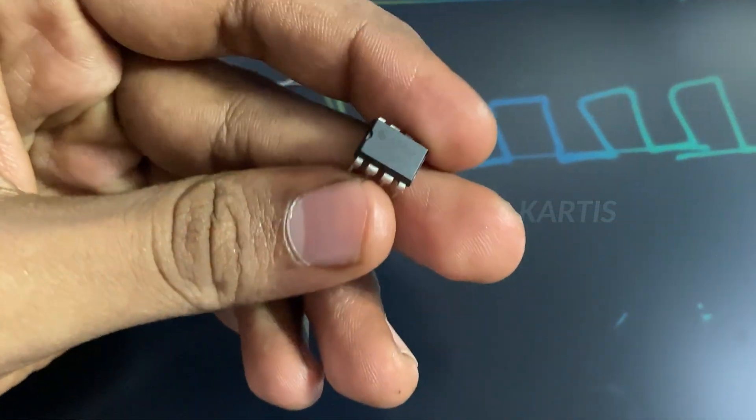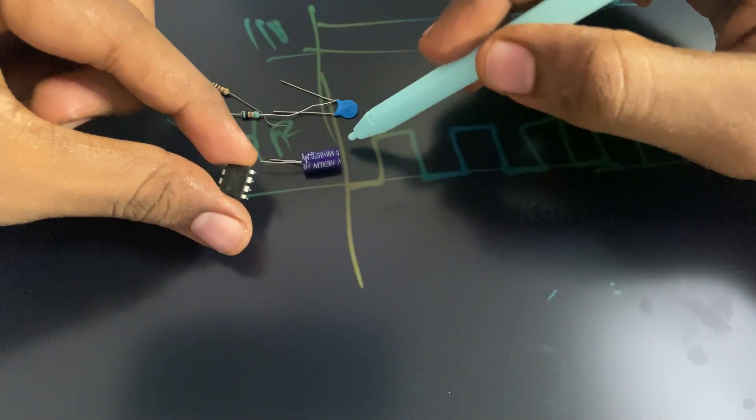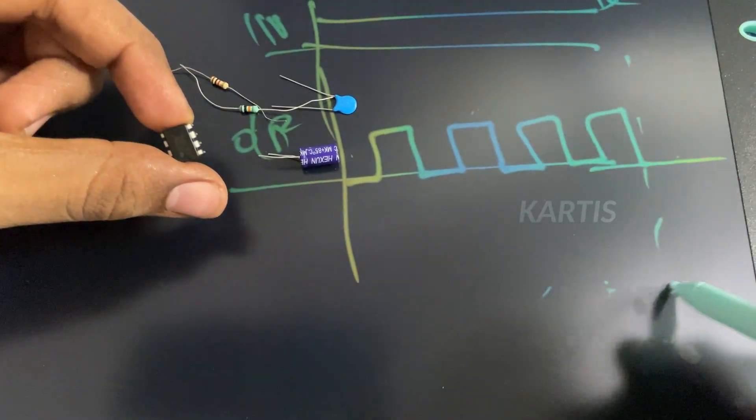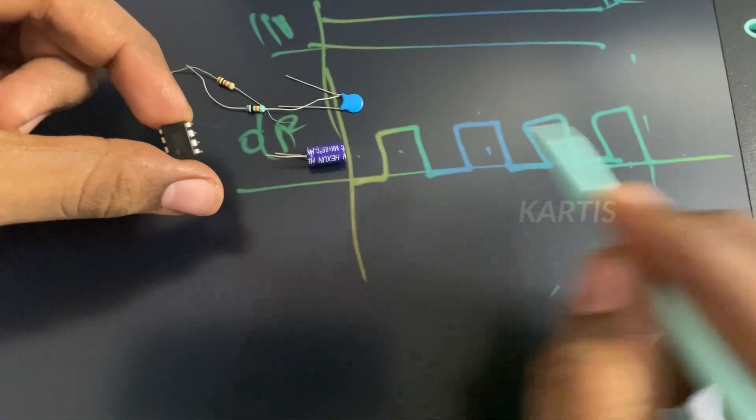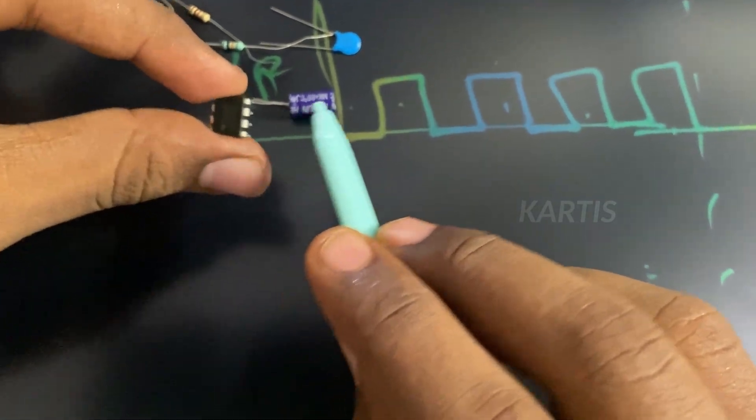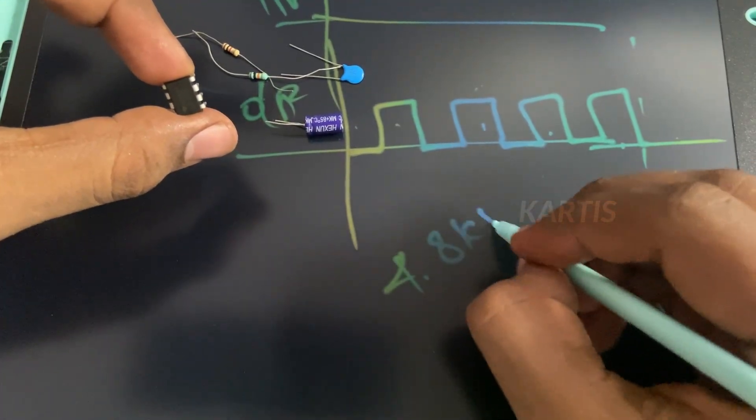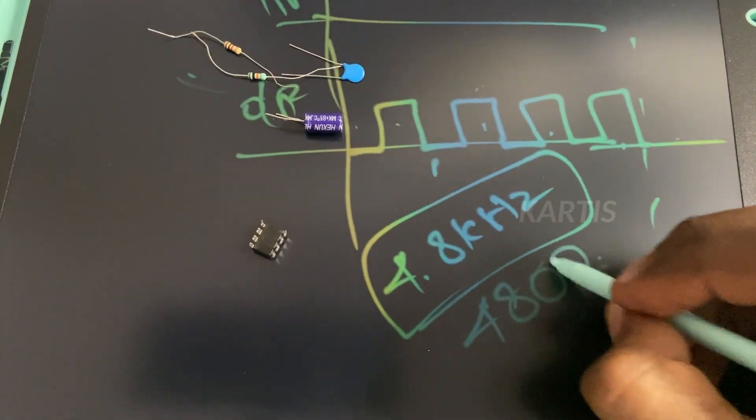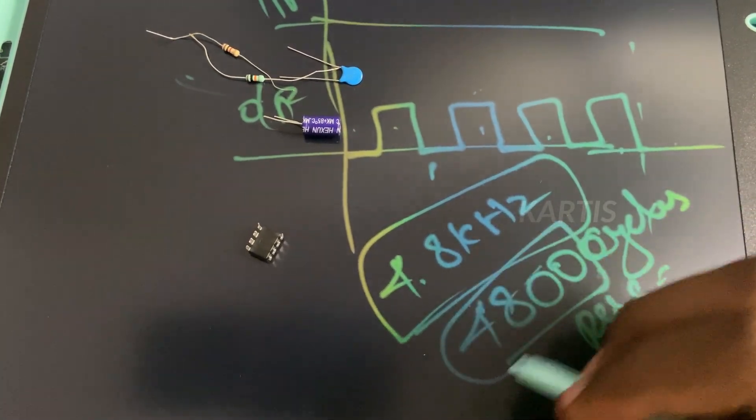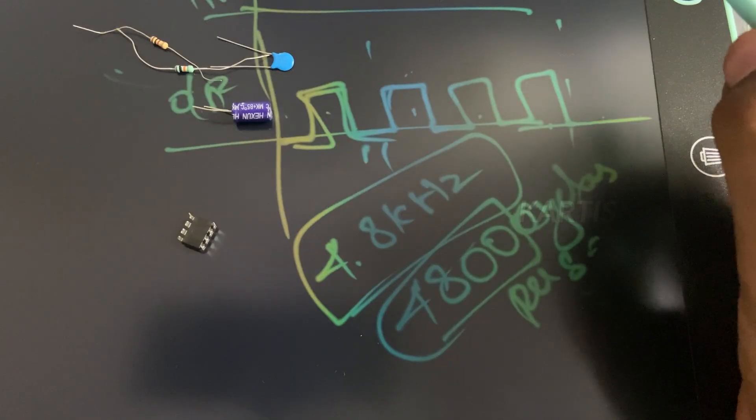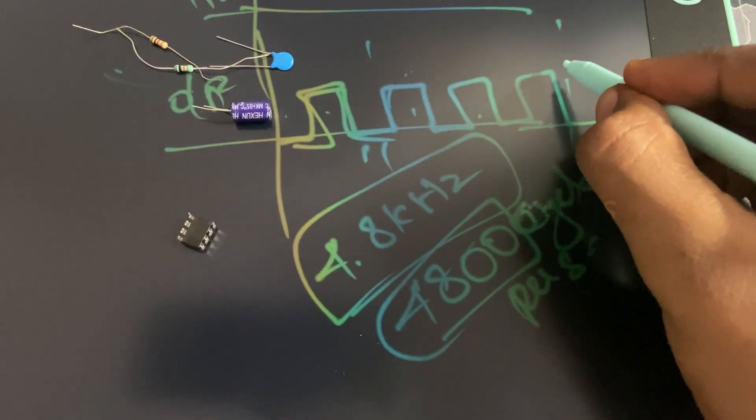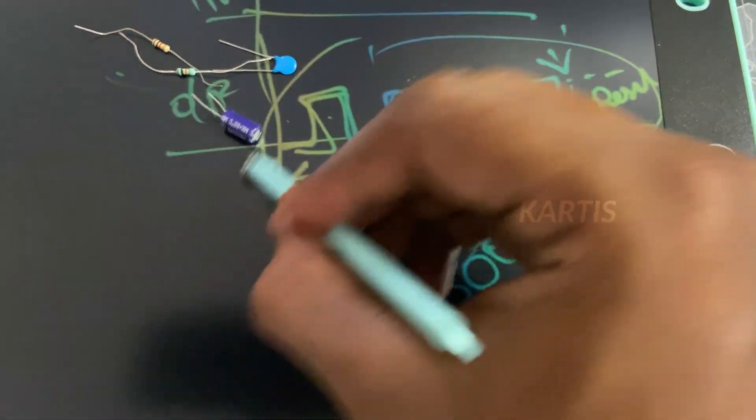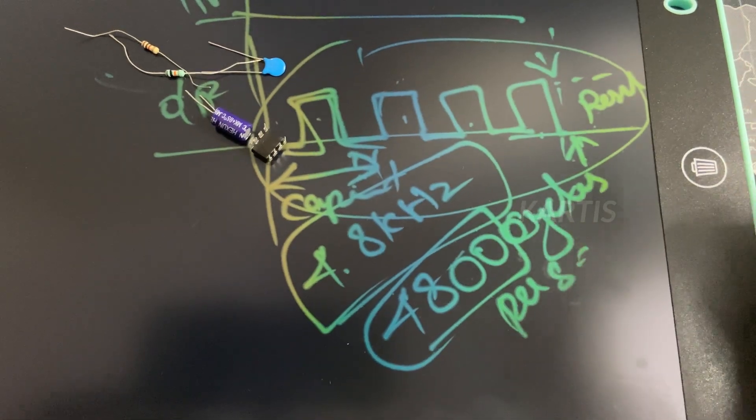If we select the capacitor and the resistors, we will be able to set the frequency. Let's say this is 1 second. Actually, 1 second is 4,800 cycles per second, which is 4.8 kHz. Basically, this length determines the capacitor value. The output is the IC. We can tweak it.